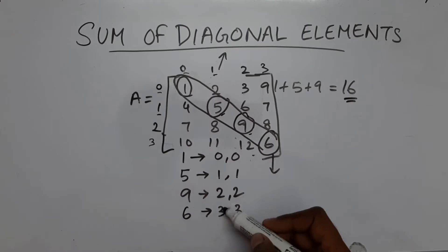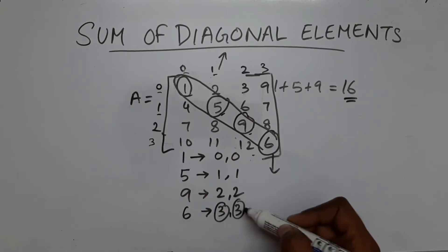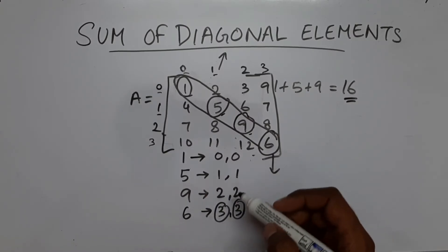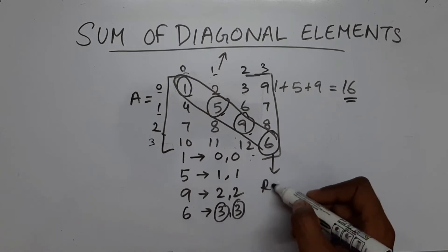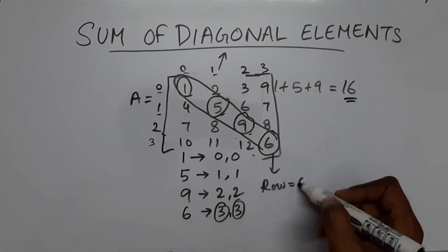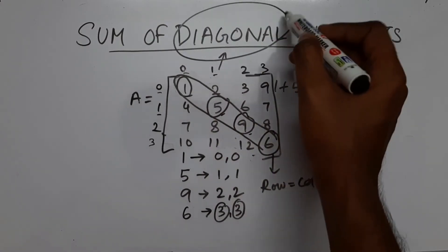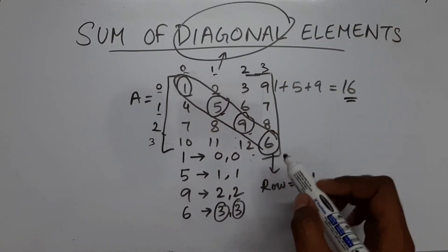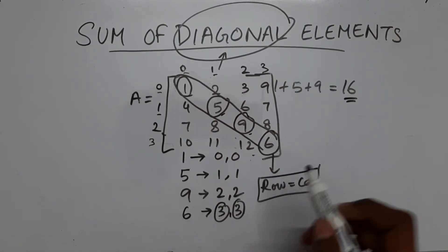So what value is present in row is the value present in column, or in short you can say that row is equal to column for diagonal elements. So now we are going to use this simple thing to write our code.